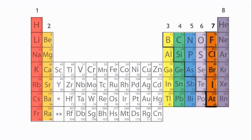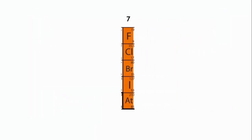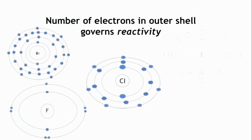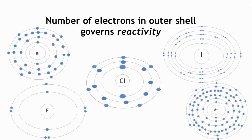For example, let's look at group 7. Fluorine, chlorine, iodine, bromine, and astatine. They all have 7 electrons in their outermost shell and all exhibit similar chemical characteristics.